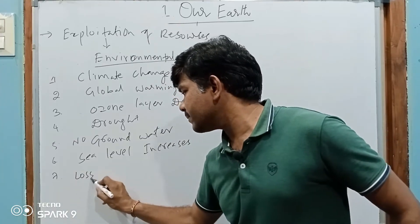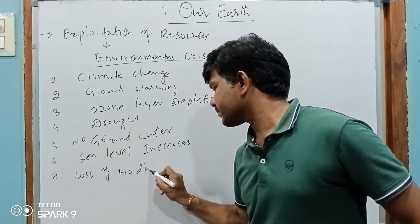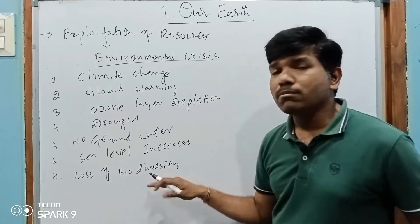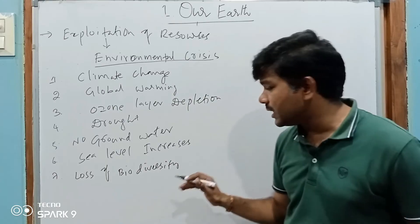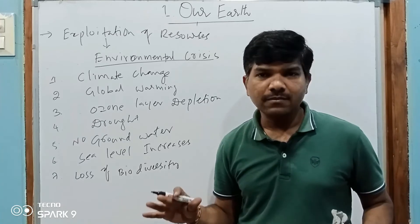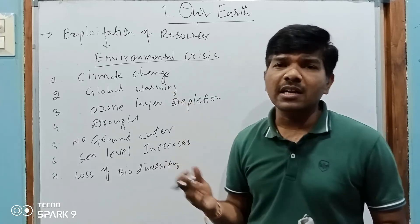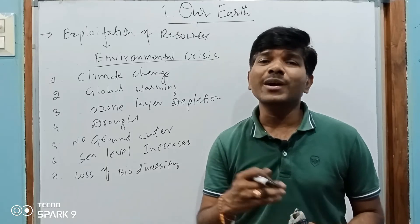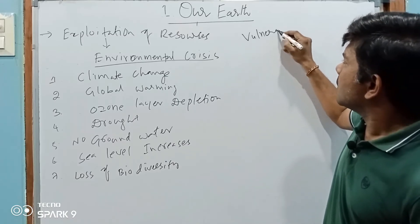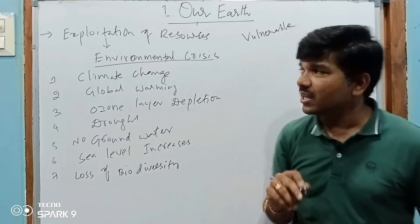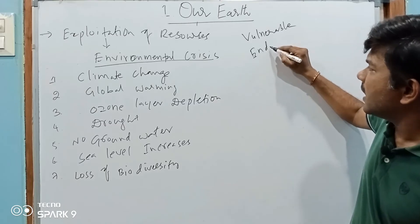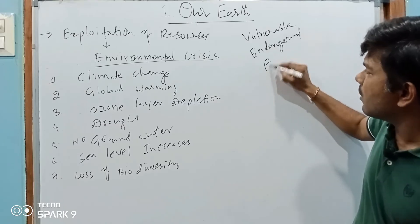Loss of biodiversity is another major consequence. If we lose biodiversity, some medicinal plants will not be available to us. Due to environmental crisis, many important plants have gone extinct. Some plants and animals are in the vulnerable category, some flora and fauna are in the endangered category, and some are already extinct.